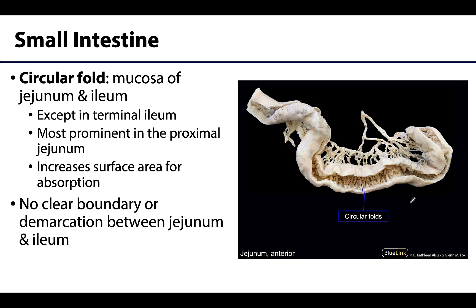If you open the jejunum and ileum to view the mucosa, you will see fairly prominent circular folds, particularly in the proximal portions of the jejunum. You will not have circular folds in the terminal portion of the ileum. The circular folds are complete — forming a complete circle — unlike the semilunar folds of the large intestine. These folds serve to increase the surface area of the small intestine, which is particularly important for absorption.